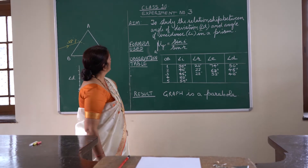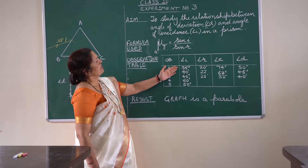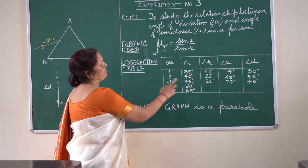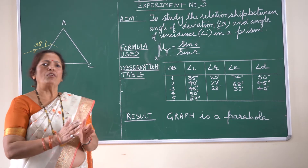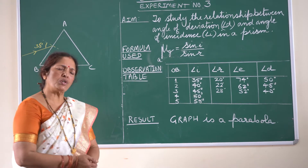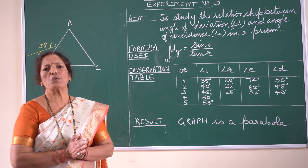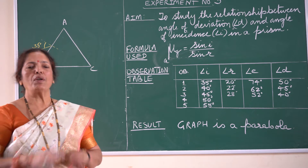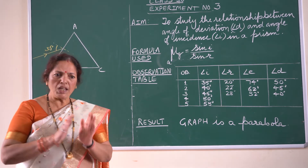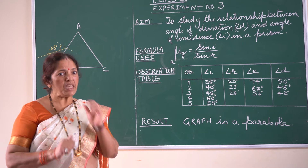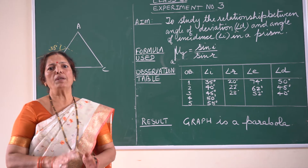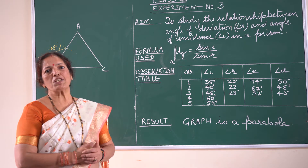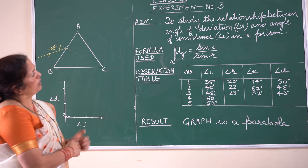I'm starting with 35 degrees — that means 35, 40, 45, 50, and 55 degrees, or you can take 60 degrees also. You are going to take 5 to 6 readings. Each reading has to be performed on a separate sheet of paper — each angle will be drawn on a separate sheet of paper while performing your glass prism experiment.